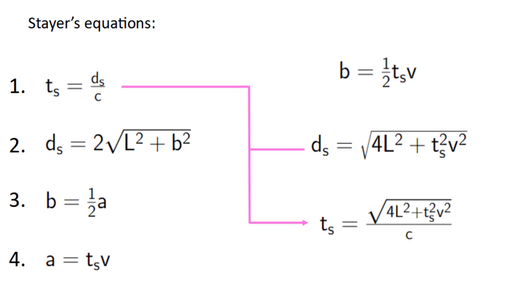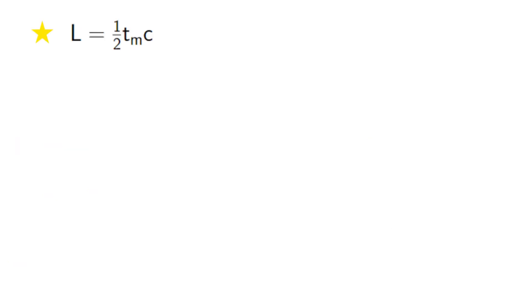We then multiply by c and then square both sides to get this interesting looking equation. So by combining the mover's equations, we got L equals one half tm c. And combining the stayer's equations just gave us ts squared c squared equals 4L squared plus ts squared v squared.